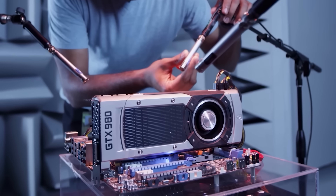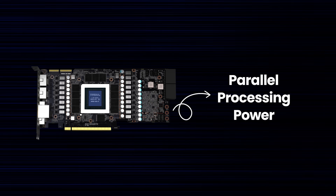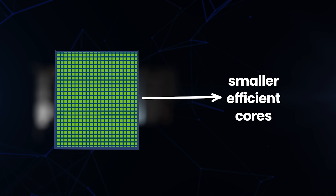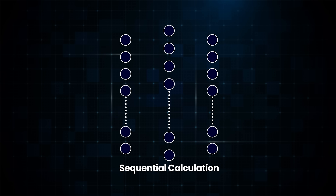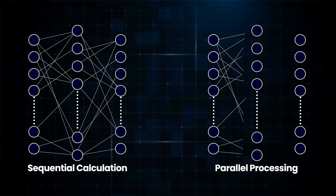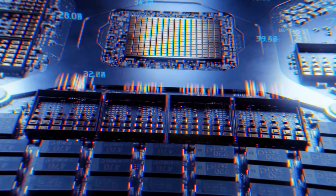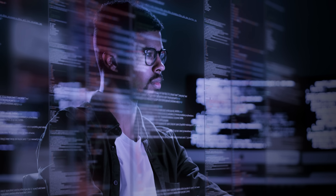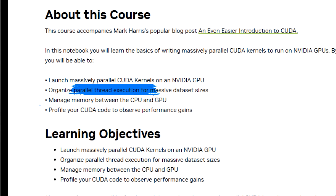We talked about how most companies use NVIDIA's GPUs to train models — but what makes them so special? It's their parallel processing power. NVIDIA's GPUs contain thousands of smaller cores that can perform tasks simultaneously, making them the go-to choice for AI model training. Training a large language model involves billions of parameters that need to be adjusted. Doing this sequentially would take impractically long, but with parallel processing you can perform these calculations simultaneously, significantly reducing training time. Compute Unified Device Architecture, or CUDA, allows developers to tap into the GPU's parallel processing power. If you want to learn how to write parallel CUDA kernels, you can do NVIDIA's course called An Even Easier Introduction to CUDA, which teaches parallel thread execution and efficient memory management.